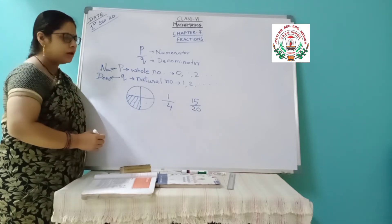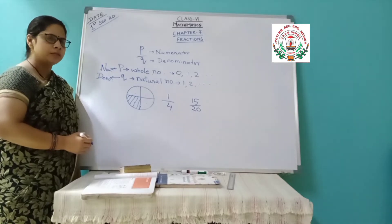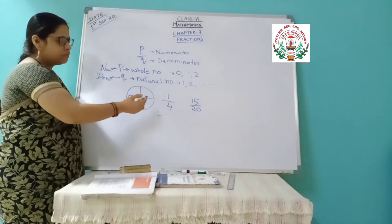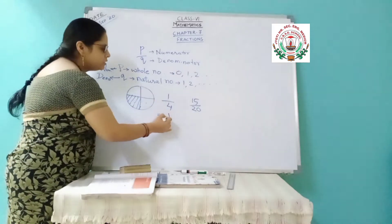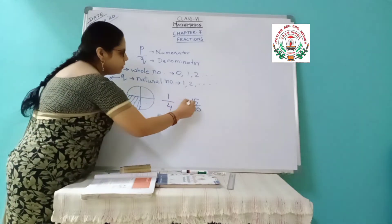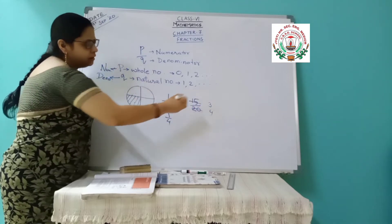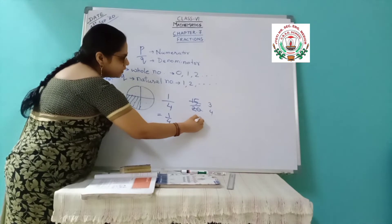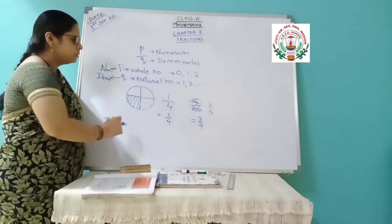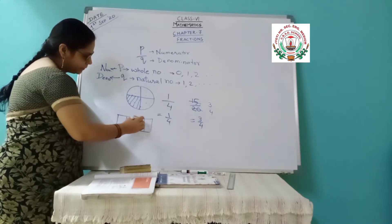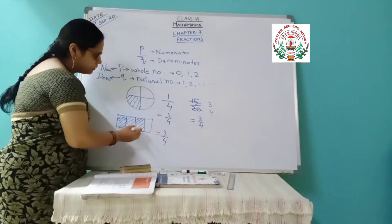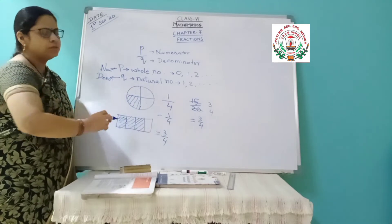Some fractions you can cancel and bring to the lowest form, and some fractions are not possible to cancel — that will already be the lowest form. Like 1 and 4 cannot be cancelled further because they only come in the table of 1, so 1 by 4 is already the simplest form. But 15 and 20 both come in the table of 5 — so 5 threes are 15 and 5 fours are 20 — giving 3 by 4. Can you cancel 3 by 4 further? No. So 3 by 4 is the simplest form, also called the lowest form of that fraction. For example if 3 out of 4 parts are shaded, that is 3 by 4.